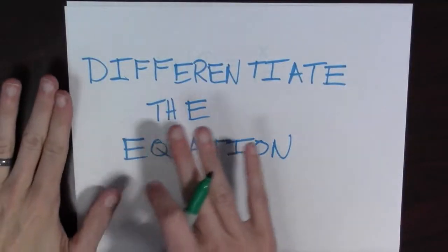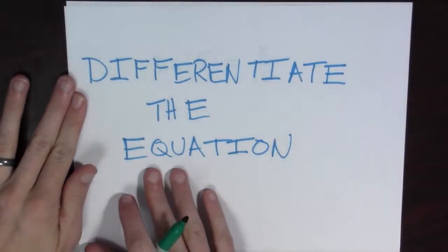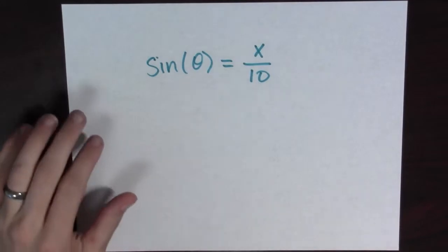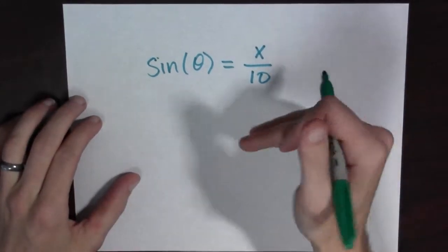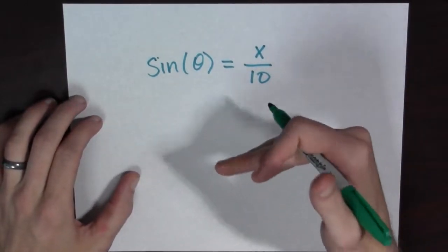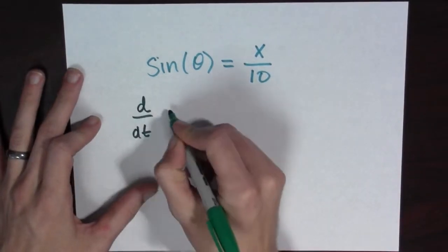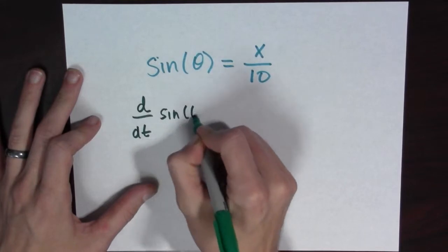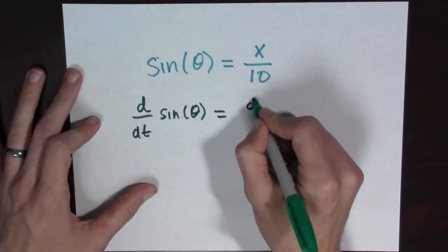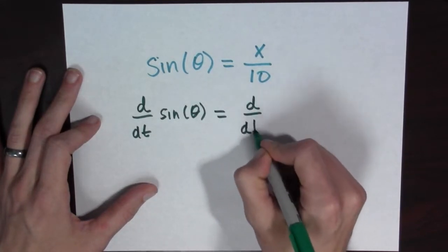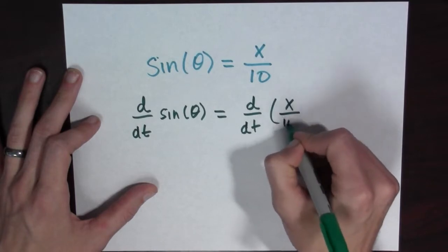Now that we have our equation, we're going to differentiate the equation. Alright, so let's look at our previous equation. Here it is. So now we want to take the derivative with respect to t. So I'm going to take the derivative of both sides.